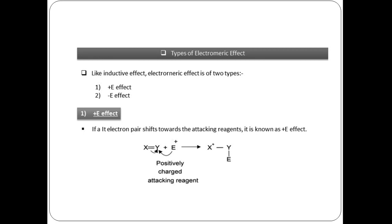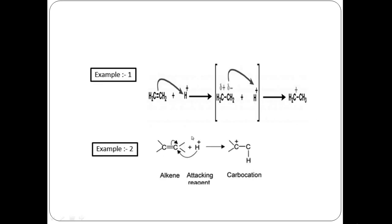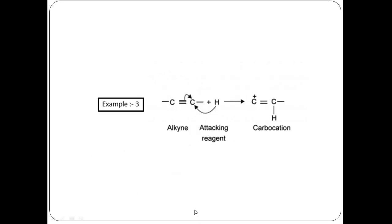The electromeric effect is divided into two types: positive electromeric effect and negative electromeric effect. If an electron pair shifts towards the attacking reagent, it is known as the positive electromeric effect. For example, in an alkene molecule, if the attacking reagent is H⁺, the electrons shift towards that attacking reagent — this is the positive electromeric effect.